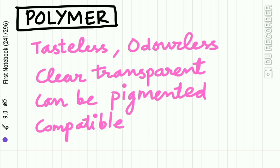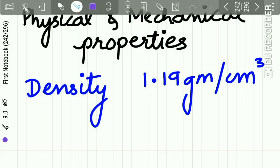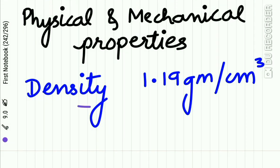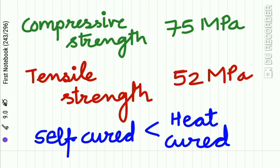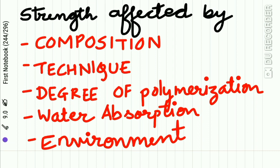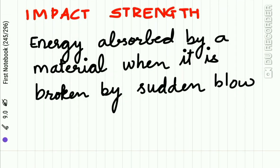The polymer, polymethyl methacrylate (PMMA), is a tasteless, odorless powder that is clear and transparent but can be pigmented. It is compatible with dyed synthetic fillers. Regarding physical and mechanical properties: the density of the polymer is 1.19 g/cm³, compressive strength is 75 MPa, and tensile strength is 52 MPa. The strength of self-cured resin is much less than heat-cured resin, and strength is affected by composition, manipulation technique, degree of polymerization, water absorption during processing, and environmental conditions.